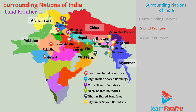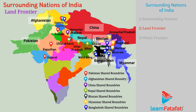West Bengal, Assam, Meghalaya, Tripura, and Mizoram share the boundary with Bangladesh. Out of all neighboring nations, Bangladesh shares the maximum boundary with India.